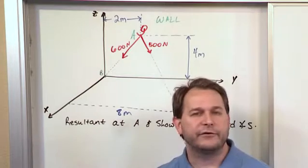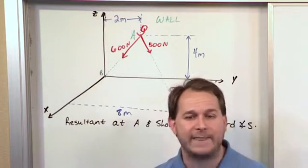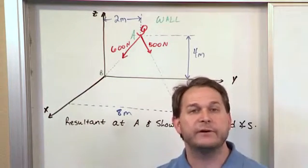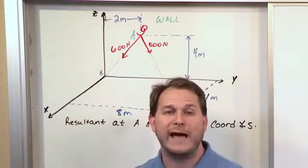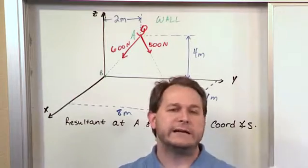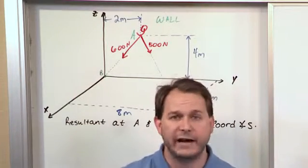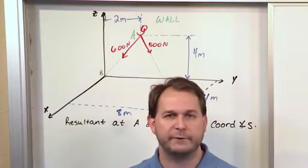Once we have the vectors in Cartesian form, it's very simple to add them. We just add the components together. That'll give us the resultant. And then even though we can't see all of the details to the end, we know once we have a resultant vector, we can find its magnitude and we can find the direction angles associated with it. We've done all that stuff before.